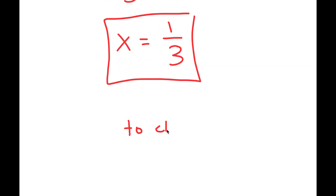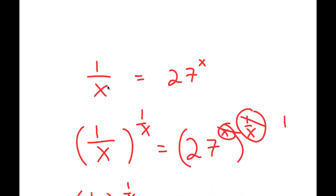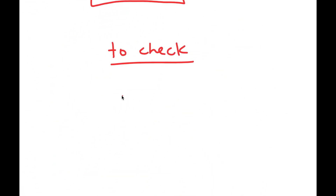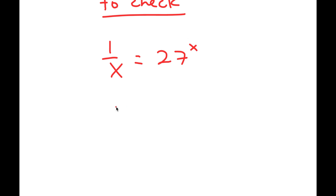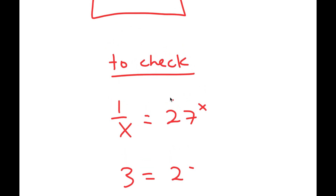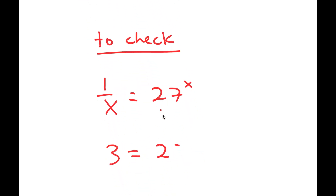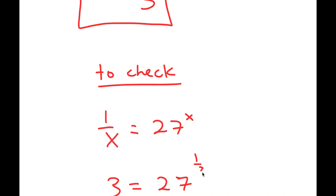To check: my original equation was one over x is equal to 27 to the power of x. So with x equal to one over three, I get three is equal to 27 to the power of one over three, which gives three is equal to three.